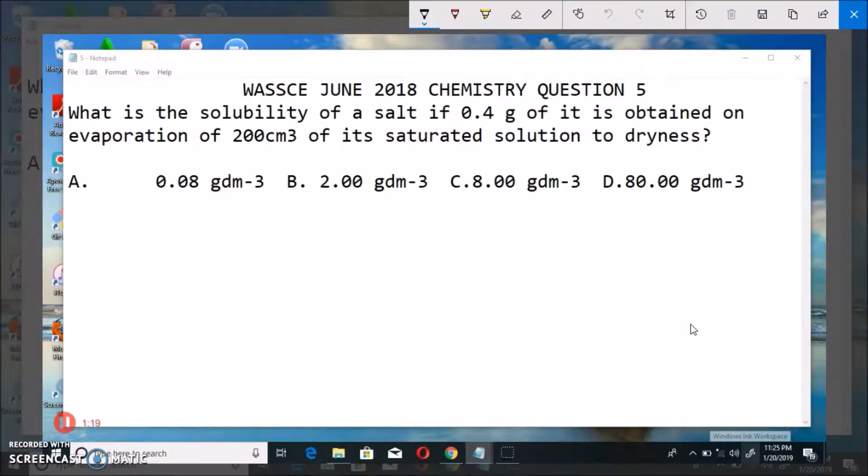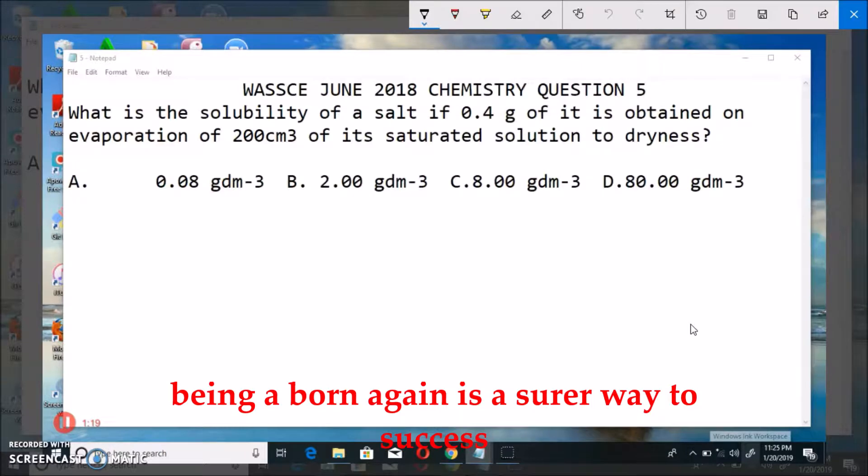What is the solubility of a salt if 0.4 gram of it is obtained on evaporation of 200 cm³ of its saturated solution to dryness?